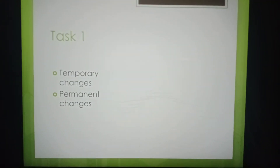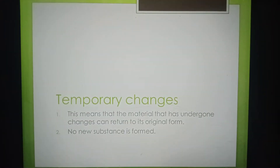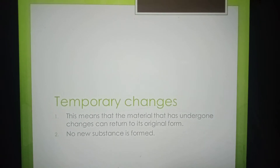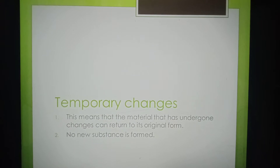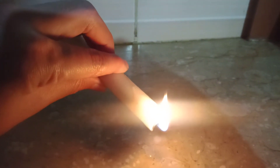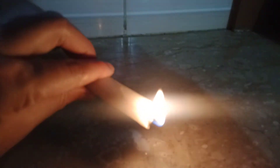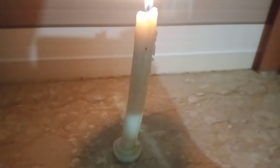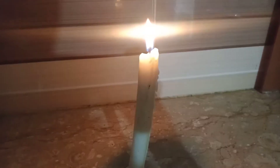Task one is about temporary changes and permanent changes. Temporary changes are those in which the material undergoes changes that can return to its original form and no new substance is formed. As you can watch here, this is a temporary change. This solid wax is converted into liquid wax and there will be no new substance. The wax is wax — it is just a change of state from solid wax to liquid wax. So this is an example of temporary change.